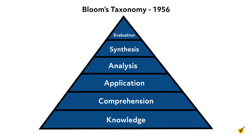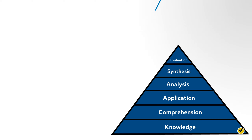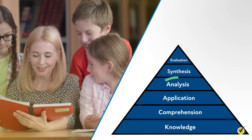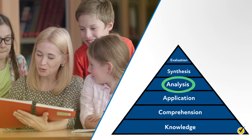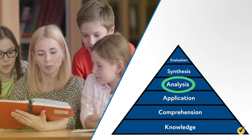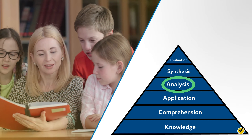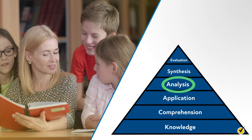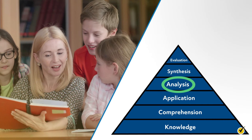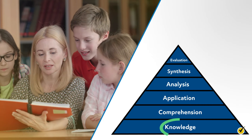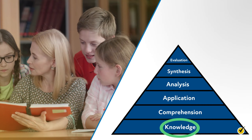Knowledge, the first level of the hierarchy, was considered the prerequisite level necessary for all the other levels to occur. For example, a teacher wants her students to analyze examples of similes in texts. However, in order to achieve this goal, students must first know what a simile is. Knowledge is prerequisite to analysis.